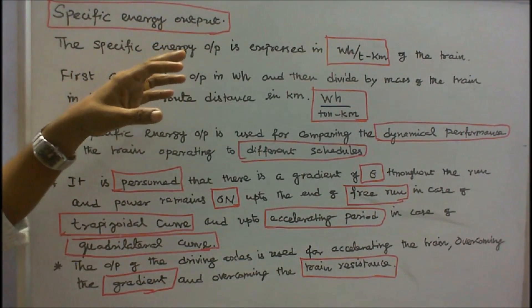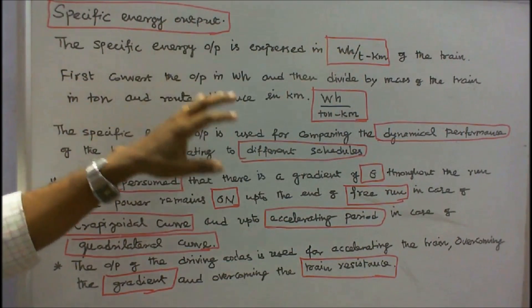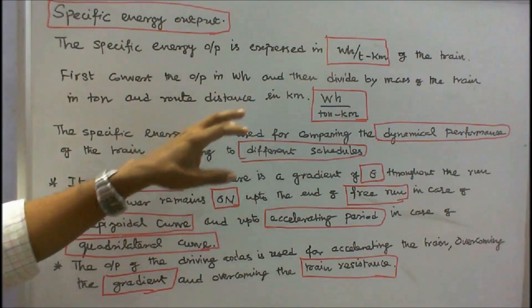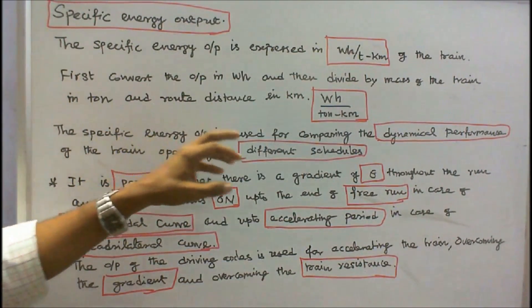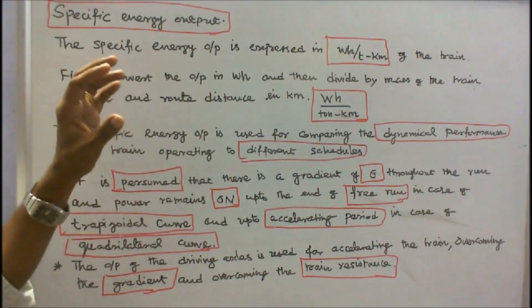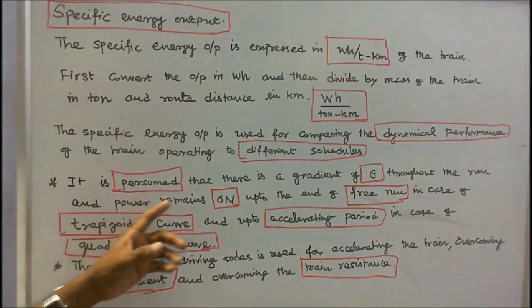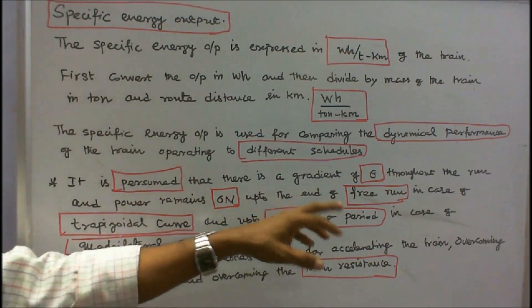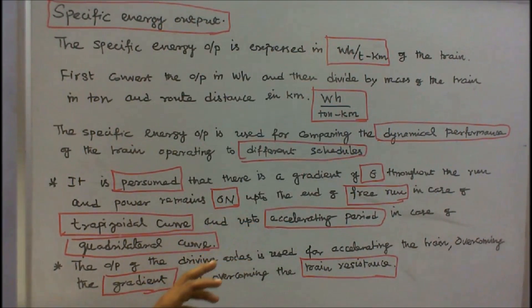The next topic is specific energy output, expressed in watt-hour per ton-kilometer of the train. First convert the output in watt-hours, then divide by mass of the train in tons and the run distance in kilometers. Therefore specific energy output equals watt-hour per ton-kilometer. Specific energy output is used for comparing the dynamical performance of trains operating under different schedules. It is assumed that there is a gradient G throughout the run, and power remains on up to the end of free run in the trapezoidal curve and up to the acceleration period in the quadrilateral curve. The output of the driving axles is used for accelerating the train, overcoming the gradient, and overcoming the train resistance G and R.